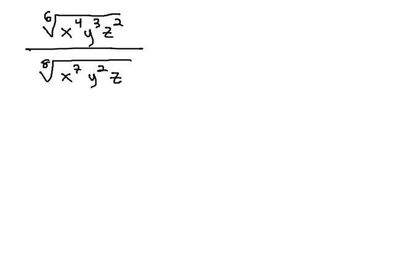Looking at this problem, we have the 6th root of x to the 4th y cubed z squared over the 8th root of x to the 7th y squared z. Looking at the index of 6 and 8, we can see the common index as a common denominator of 6 and 8 will be 24.